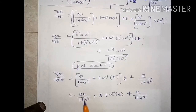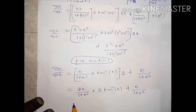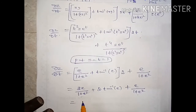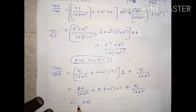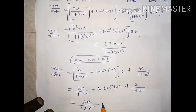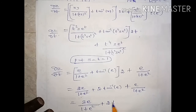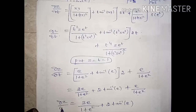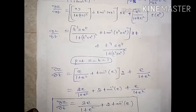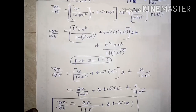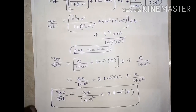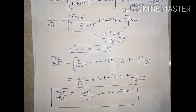Adding the terms with common denominator: 2e by (1 plus e square) plus e by (1 plus e square) equals 3e by (1 plus e square), plus 2 times tan inverse of e. So dou z by dou t equals 3e by (1 plus e square) plus 2 tan inverse of e. We will find out the next question. Thank you.